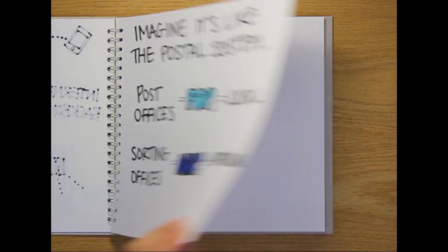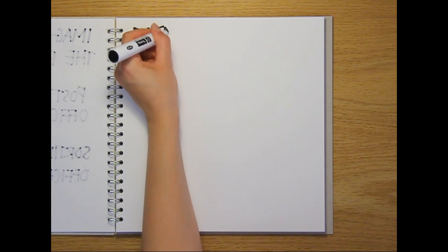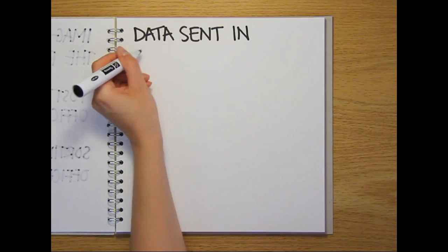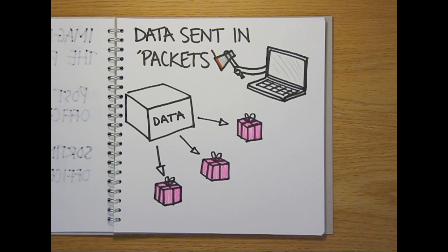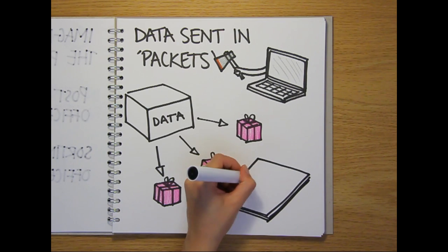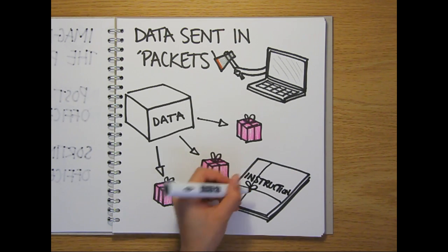But how is the data actually transmitted? Because it's not practical to send data in one big chunk, your computer chops files into a series of smaller pieces called network packets. These are each wrapped up, addressed and sent individually, along with instructions explaining how to reassemble the packets to recreate the original file.